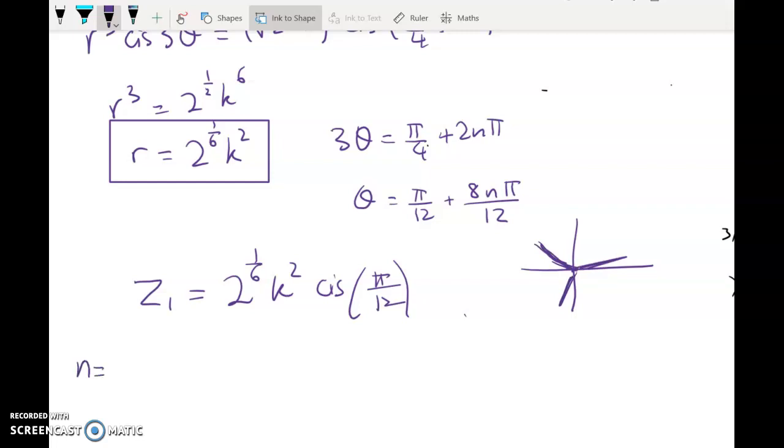Then for z2, I'm going to have n equals 1, and so I get z2 is equal to 2 to the 1/6 k squared cis, and it's going to be pi on 12 plus 8 more, so cis of 9 pi on 12. 9 twelfths is 3 quarters, so it's going to be 3 pi on 4.